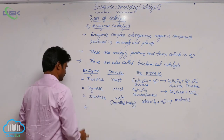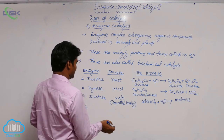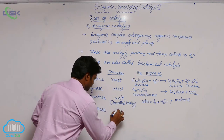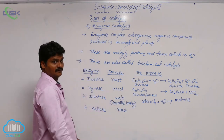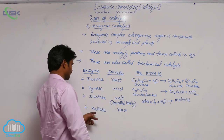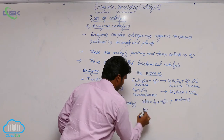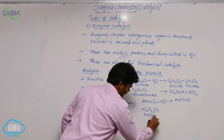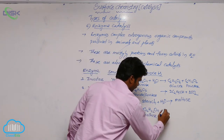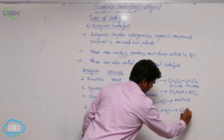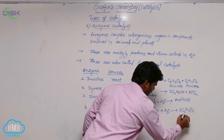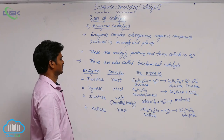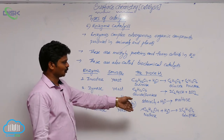The fourth enzyme is maltase, sourced from yeast. Maltase converts maltose (C12H22O11) plus water into two moles of glucose (C6H12O6). So maltase converts maltose into glucose.